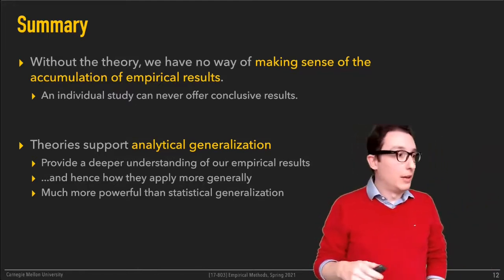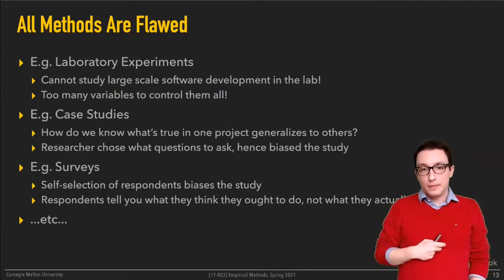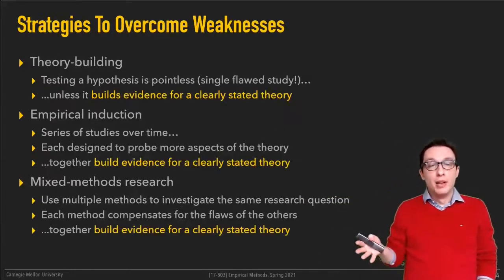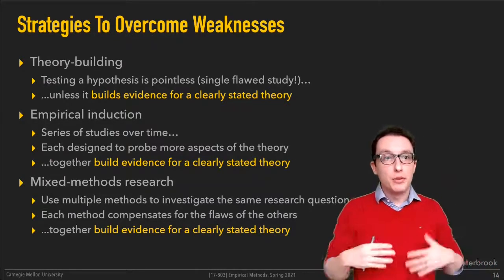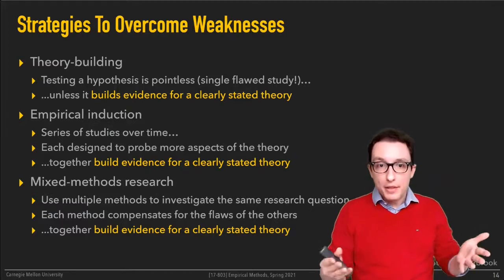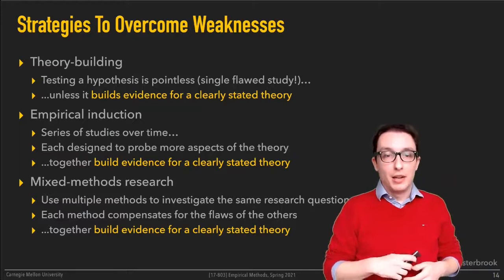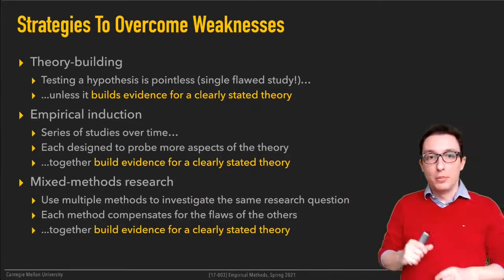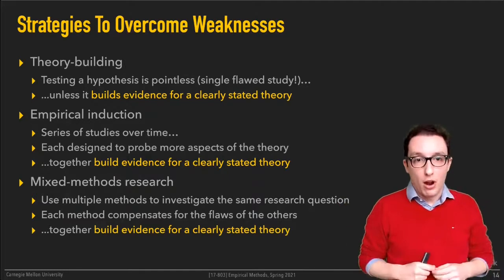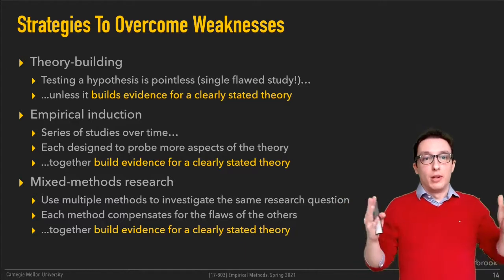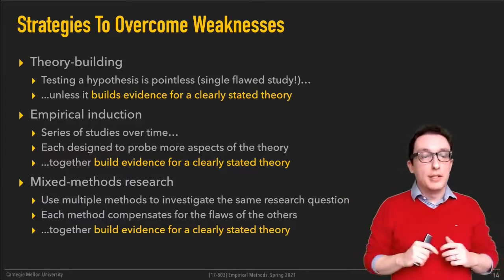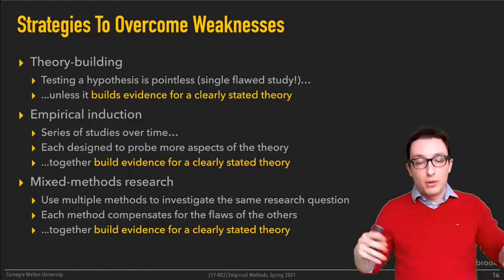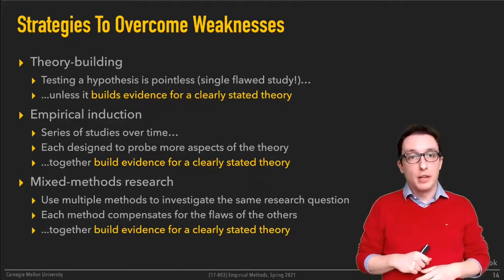Theory can help reduce the weaknesses of individual methods. Start thinking about hypotheses not in isolation as one-offs, but as instances of some clearly stated theory, and evidence building towards that theory rather than being specific and restricted to some particular context. That's the rant about theory — it's really useful, it's a great strategy to overcome the weaknesses of individual studies and to think about, design, or execute any individual study.